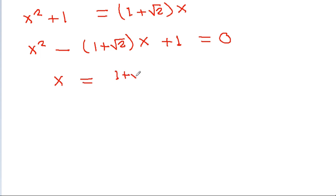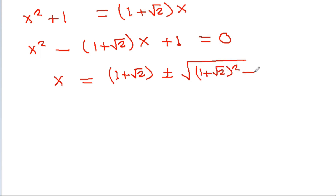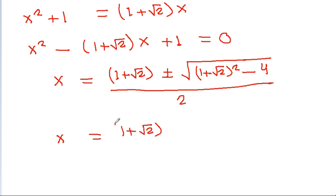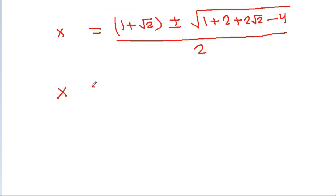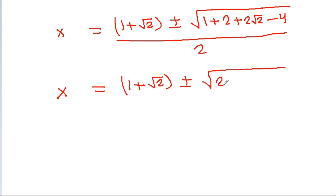Then x = [(1 + √2) ± √((1 + √2)² - 4)] / 2. Now (1 + √2)² = 3 + 2√2, so (3 + 2√2 - 4) = 2√2 - 1. Therefore x = [(1 + √2) ± √(2√2 - 1)] / 2.